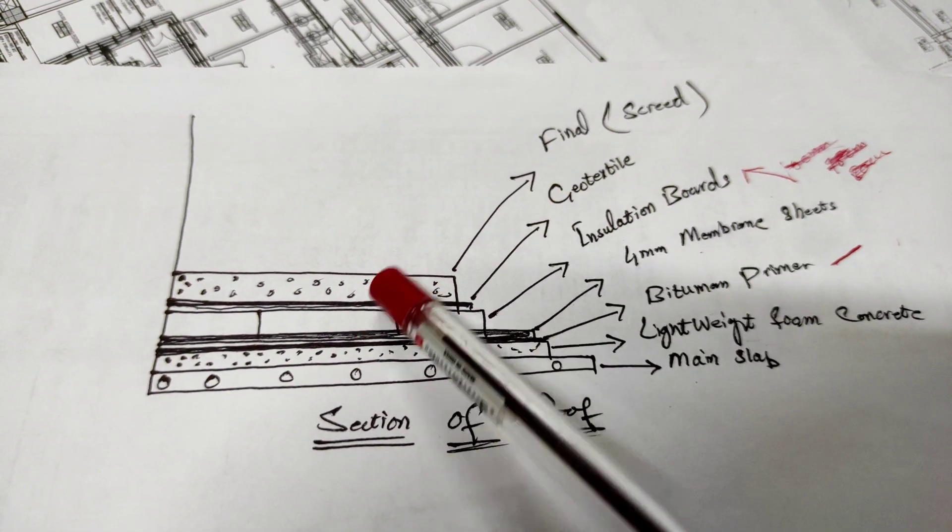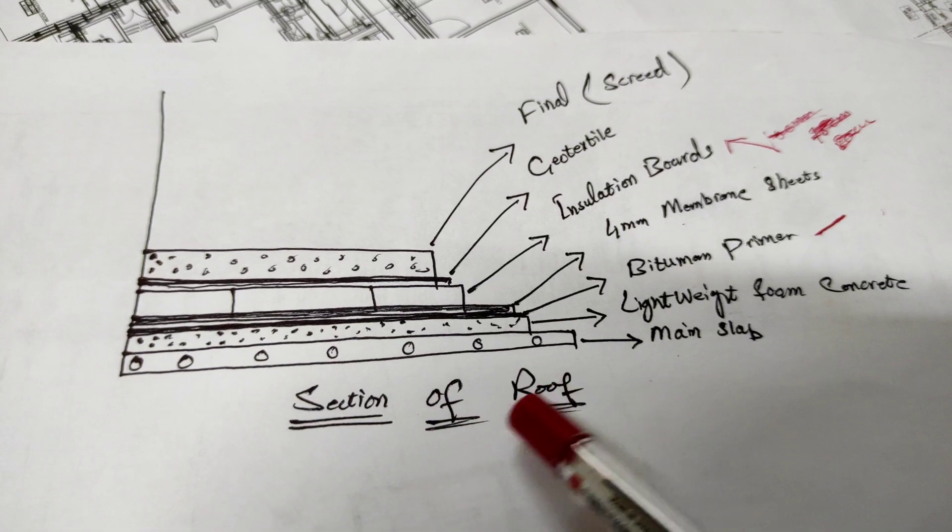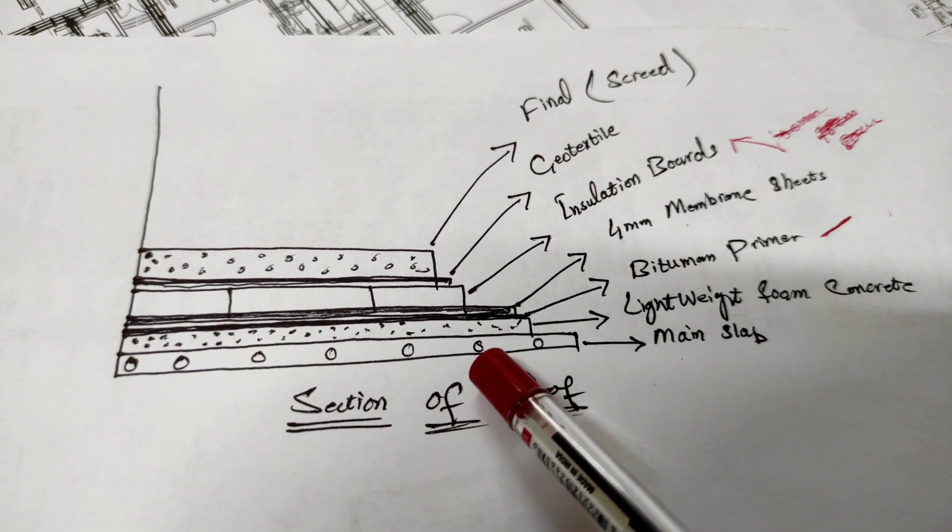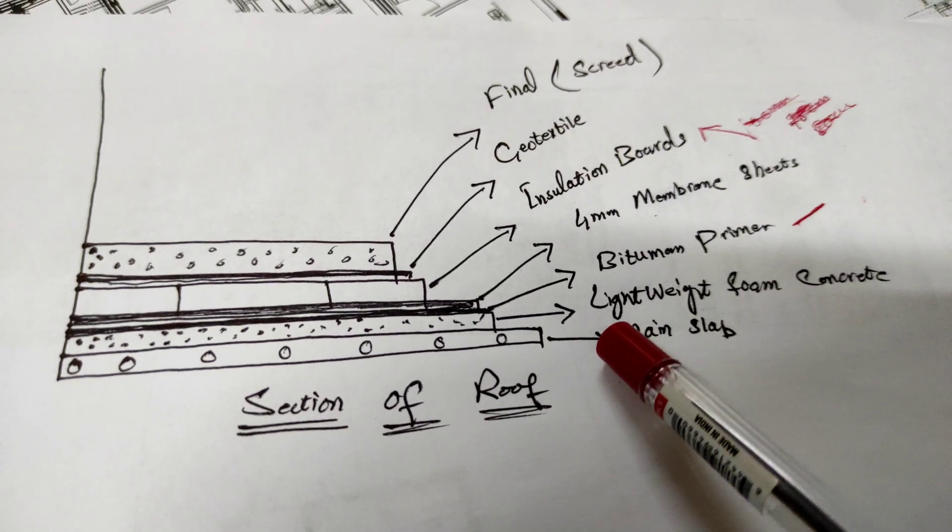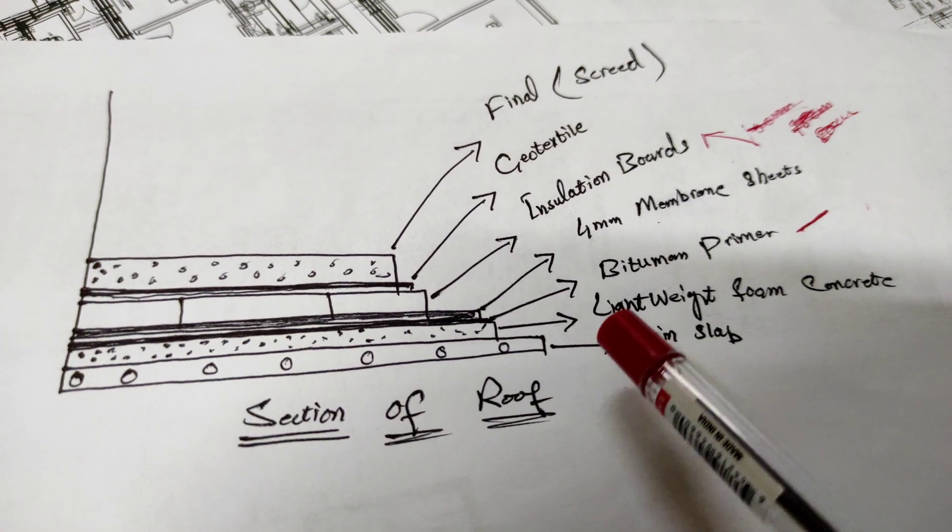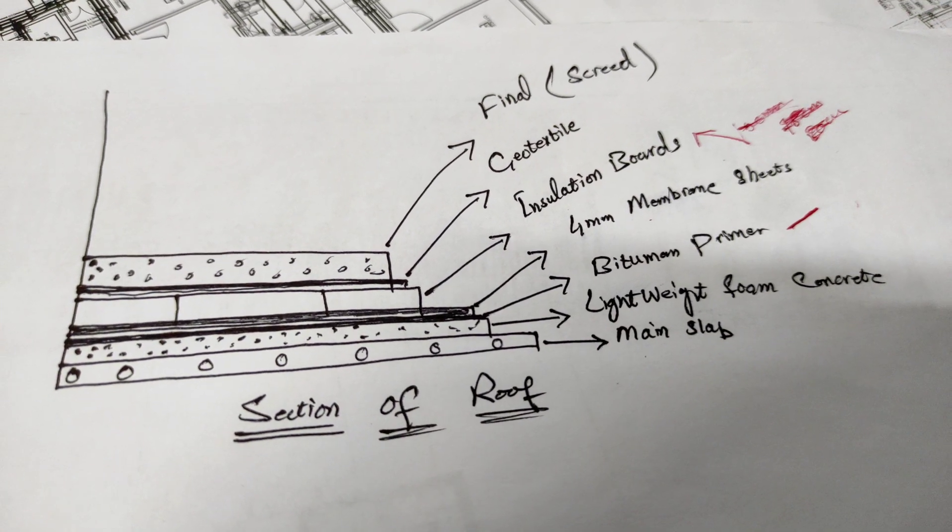I have a section of the waterproofing system. This is the total waterproofing system method. First of all, we have a main slab - this is hollow core slab and precast. After this, we will lay lightweight foam concrete. It's basically a mixture of three components.